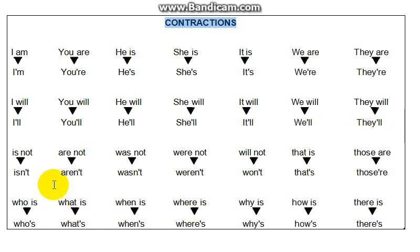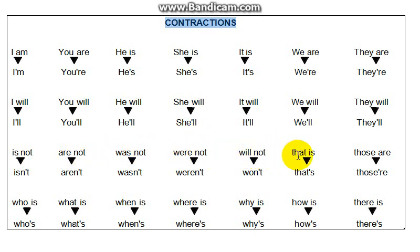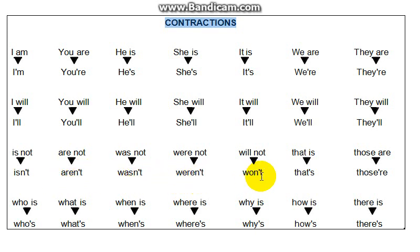Then you have the negative forms. 'Is not' becomes 'isn't.' 'Are not' becomes 'aren't.' 'Was not' becomes 'wasn't.' 'Were not' becomes 'weren't.' 'Will not' becomes 'won't.' Those are the negative contractions.